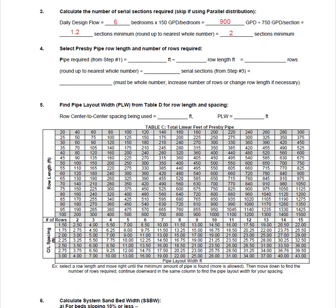Now let's determine our pipe row length and how many rows we will need. We're going to pull the value from step one — 420 feet of pipe — and divide by the row length we have selected. The rows should be as long as the site will accommodate, with a maximum row length of 100 feet. For this example, we have selected a row length of 70 feet. Dividing our total required pipe by 70 feet, we find that we need six rows. We then divide this by the number of required serial sections from step three, which was two. We will need three 70-foot rows in each of our two required sections.